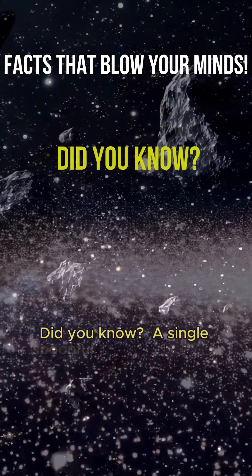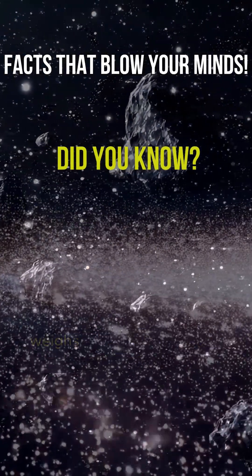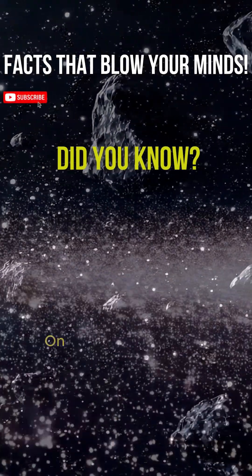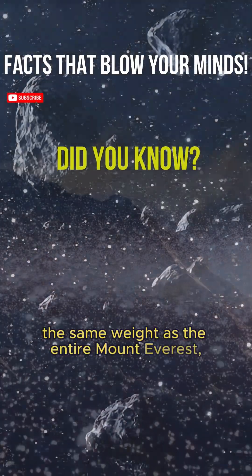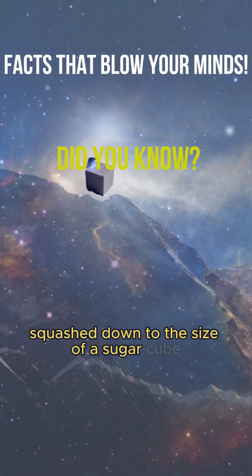Did you know? A single spoonful of a neutron star weighs about 1 billion tons on Earth. That's roughly the same weight as the entire Mount Everest, squashed down to the size of a sugar cube.